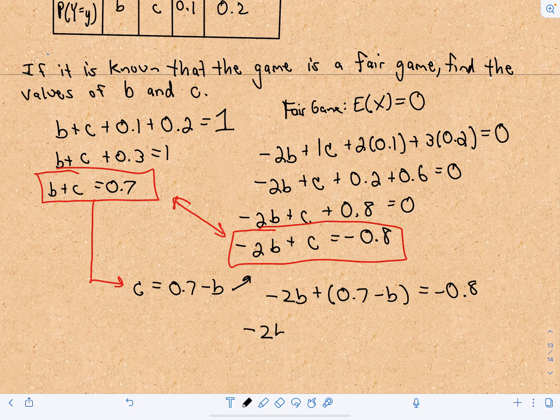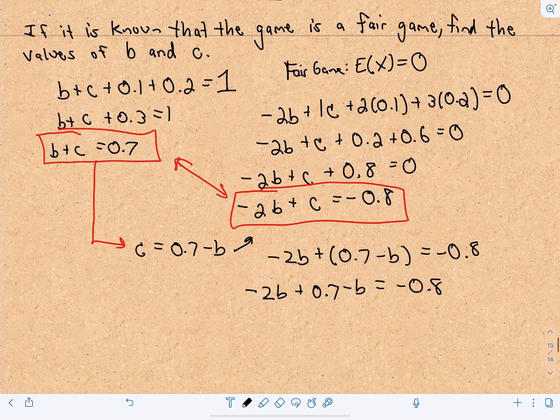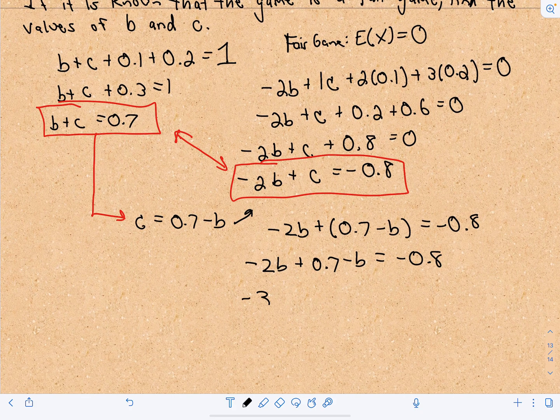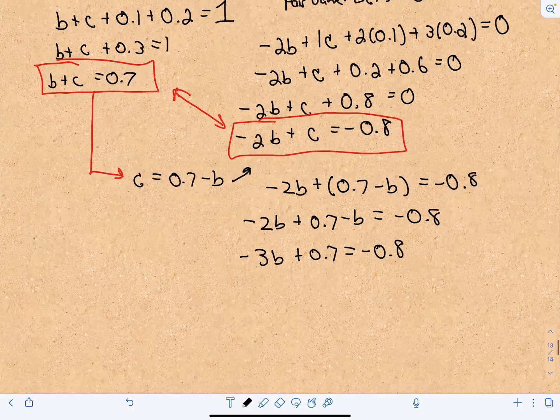So that's negative 2B plus 0.7 minus B. I'm just getting rid of the parentheses. Nothing else is happening here. Okay, so that's going to give me negative 3B plus 0.7 equals negative 0.8. I can subtract 0.7 from both sides.